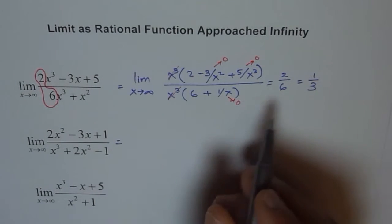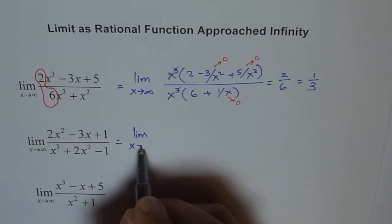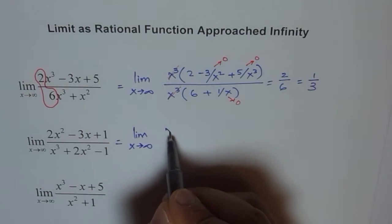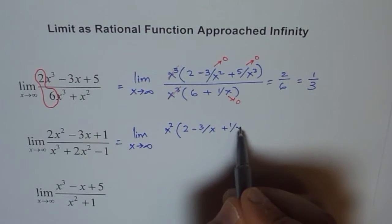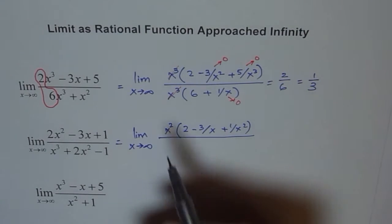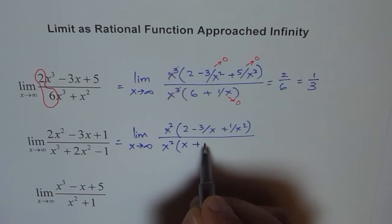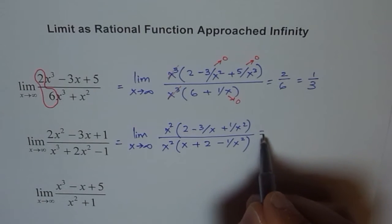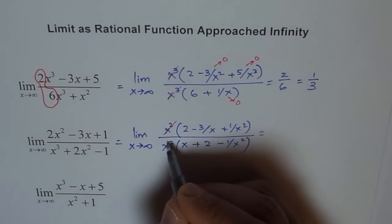Now let's do the next one. We will follow the same strategy. What can we factor out here? We can factor out x². So we get x² times (2 minus 3 over x plus 1 over x²). In the denominator I will also factor out x², because we want to cancel out the common factor. We get x² times (x plus 2 minus 1 over x²).